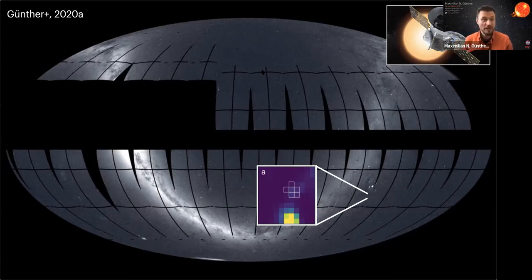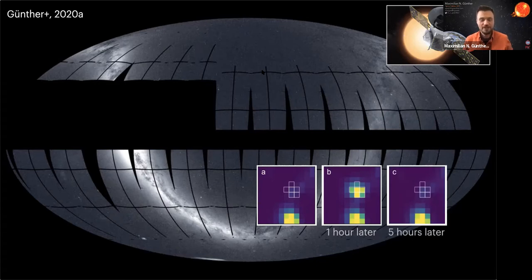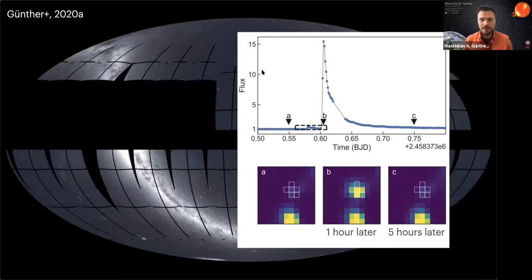Zooming into the composite TESS image and picking a particular star, we can see how its light is spread across TESS image pixels. Looking at those pixels one hour later, there is an immense brightening event of this star. A few hours after that, the star returns to its quiescent brightness. The light curve of this object shows that this particular red dwarf got brighter by a factor of 16 — an immense brightening event. The biggest brightening events in the literature for Proxima Centauri reached about 64 times the quiescent brightness.